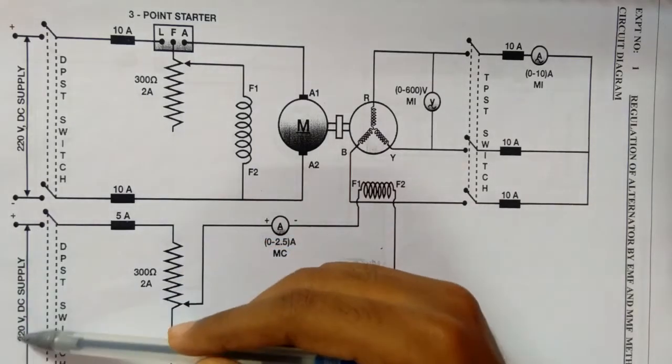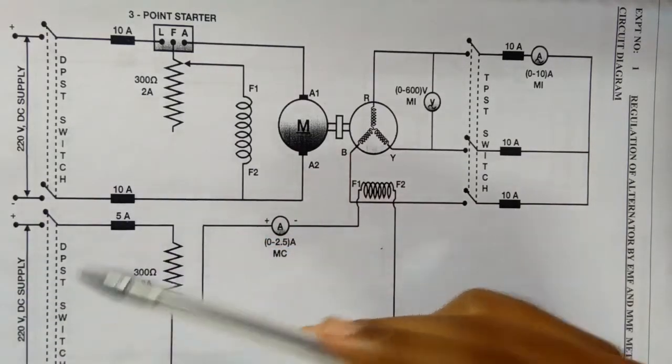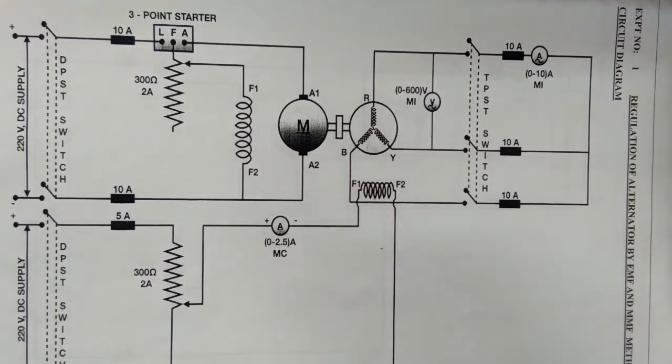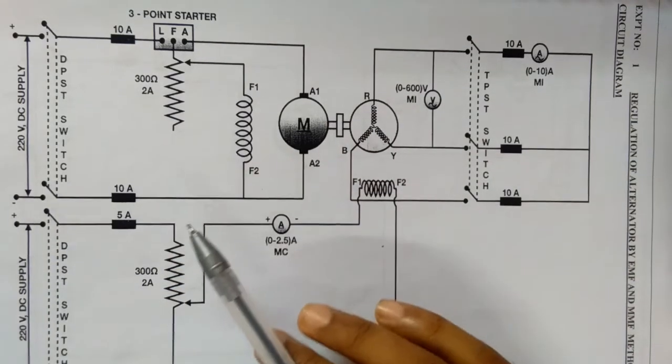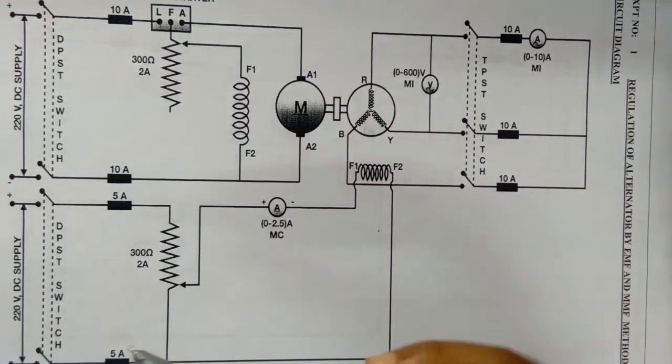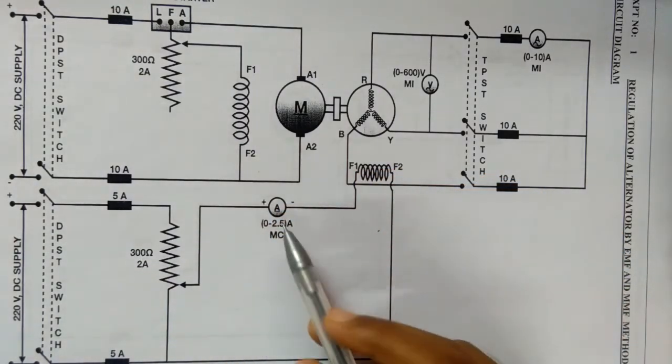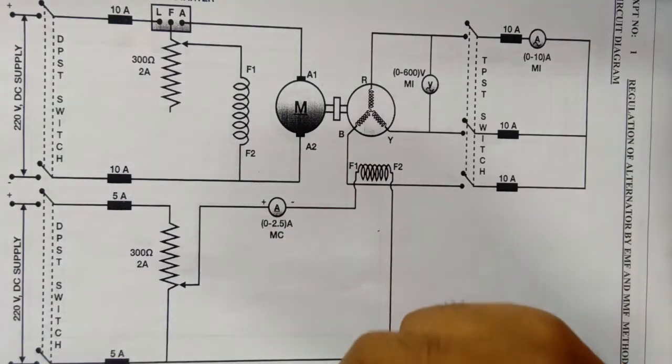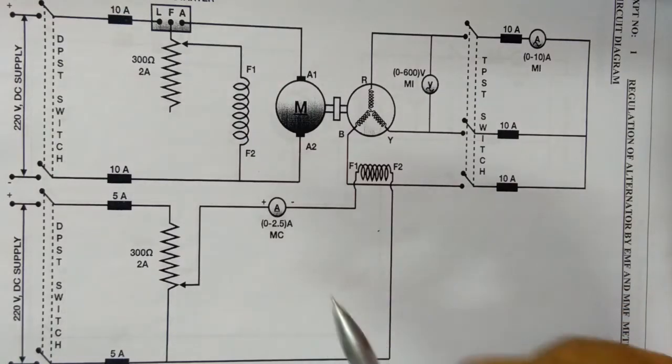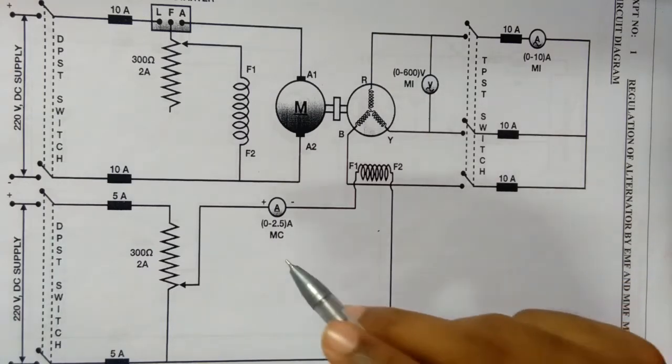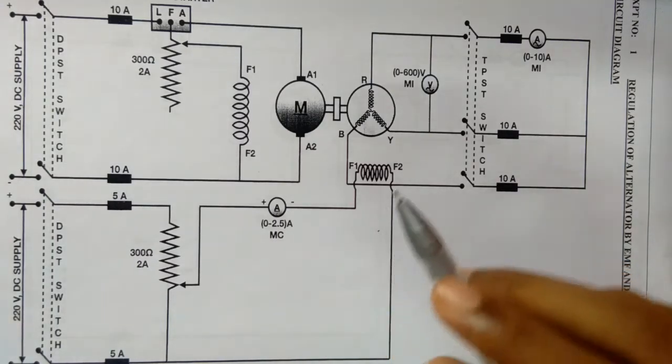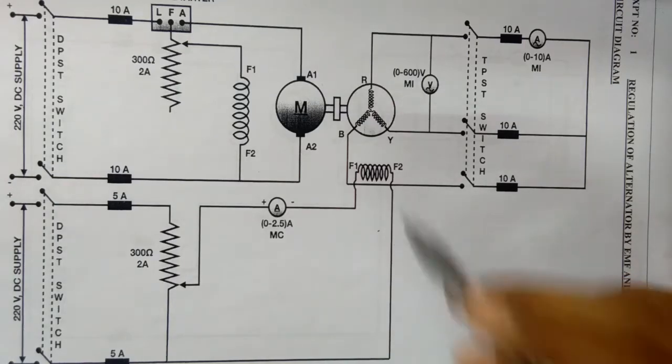220V DC supply is switched on to the field winding of the alternator by closing the corresponding DPSC switch. So for the OC test using the potential divider, current in the field circuit is increased in the step of 0.1 Ampere. Under each step, the alternator induced voltage indicated by the voltmeter and the corresponding field current IF are noted down. This procedure is continued till the alternator voltage is 110% of its rated voltage.